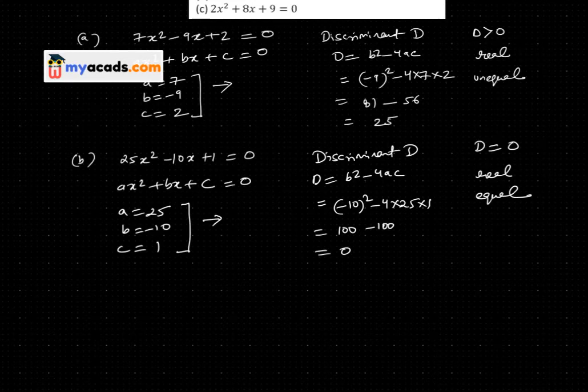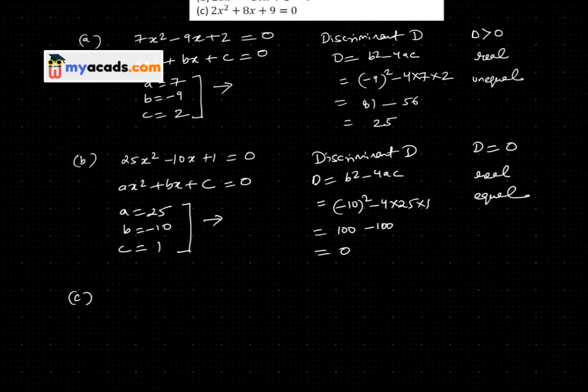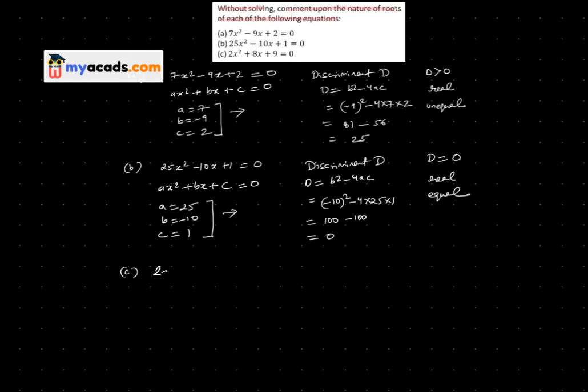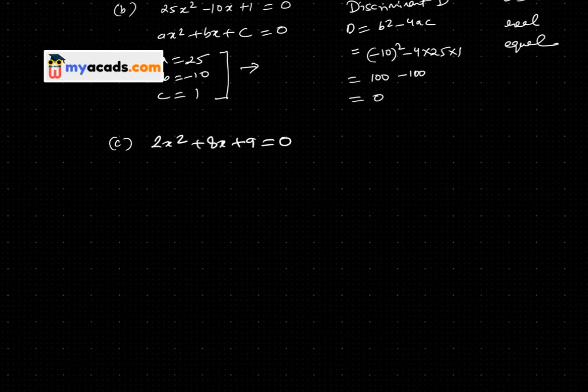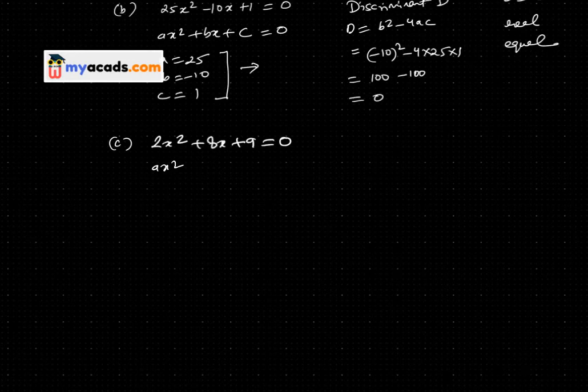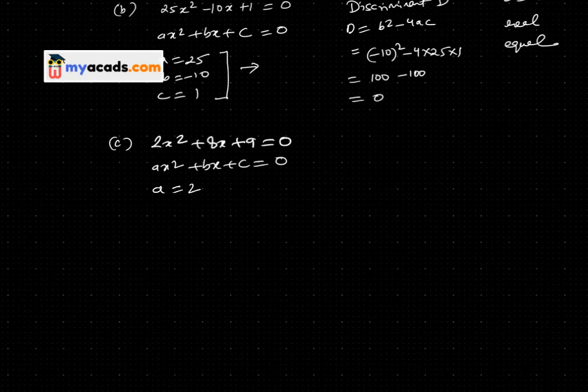Now the third equation is 2x² + 8x + 9 = 0. I will compare this to the standard form ax² + bx + c = 0. So a = 2, b = 8, and c = 9.